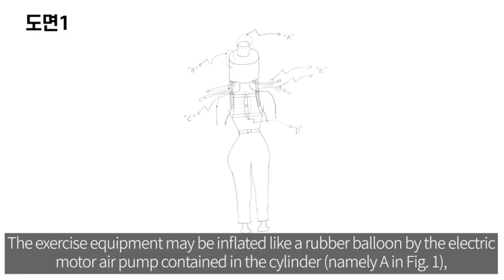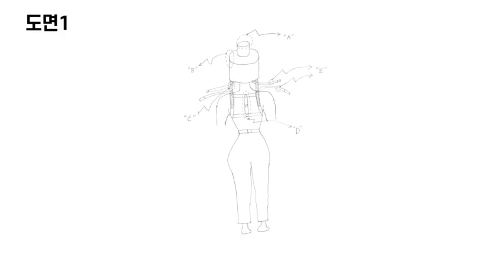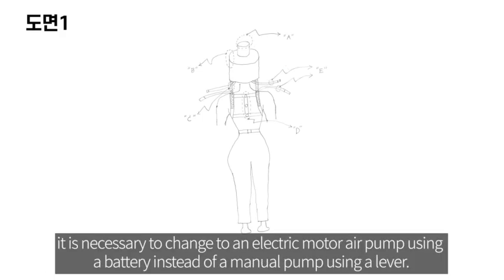The exercise equipment may be inflated like a rubber balloon by the electric motor air pump contained in the cylinder, namely A in Figure 1. Conversely, as the air escapes from the exercise equipment, the volume may be compressed. Here, as in the case of the shoulder parasol, it is necessary to change an electric motor air pump using a battery instead of a manual pump using a lever.